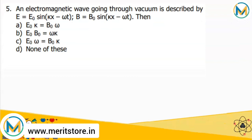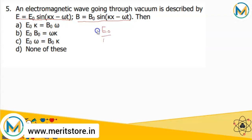The next question: an electromagnetic wave going through vacuum is described by E = E₀ sin(kx − ωt) and B = B₀ sin(kx − ωt). The amplitudes of the electric and magnetic fields are related as E₀/B₀ = c, where c is the speed of the wave, and E₀ and B₀ are the amplitudes of the respective fields.